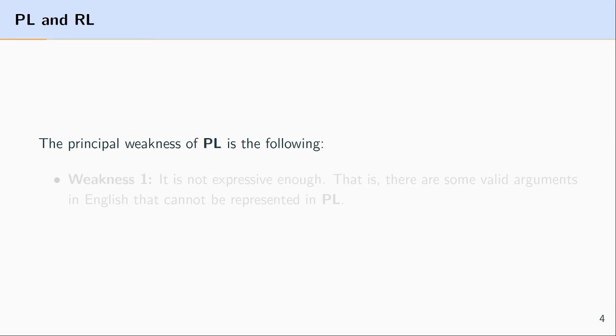So what's the problem with propositional logic? The main problem is its expressiveness—it is not expressive enough. What this means is that there are some valid arguments in English, some arguments where we say the conclusion is a logical consequence of the premises. But when we go to translate that argument into the language of propositional logic, it doesn't come out as an instance of logical consequence. We have a valid argument in English, but it doesn't come out as valid in propositional logic. That seems like a problem with the formal language. What we would like is that the formal language is capable of capturing every valid argument in English, if not more.